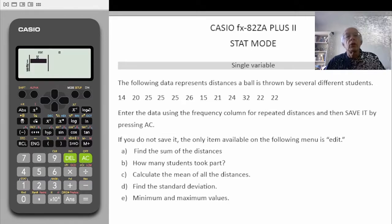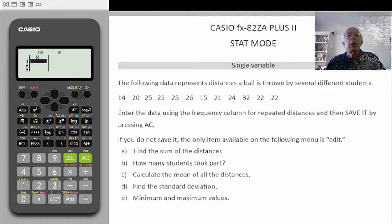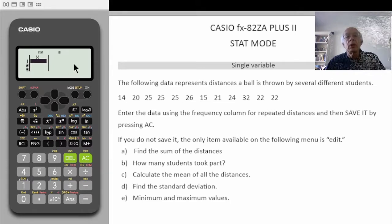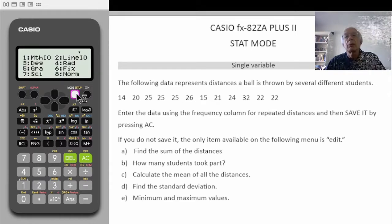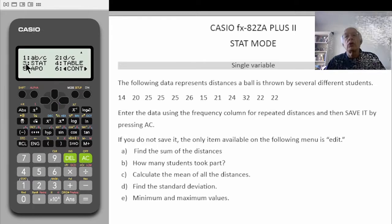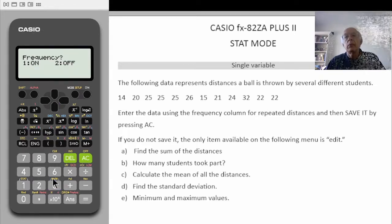If we look at the data, you will also notice that some of it occurs more than once — in other words, it has a frequency greater than 1. We need to then have a frequency table as well. To do that, you go shift, set up, down a screen, choose number 3, stat, and we will turn the frequency column on.